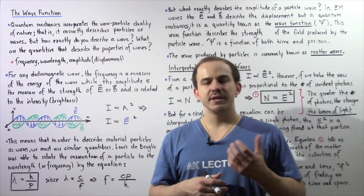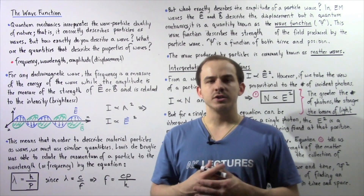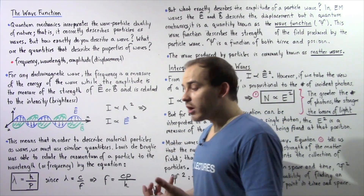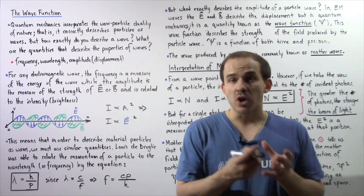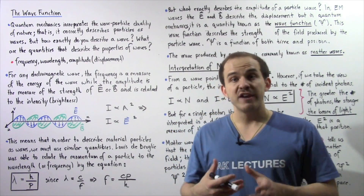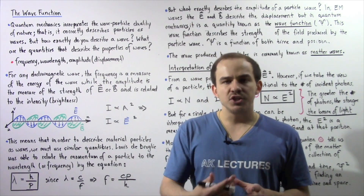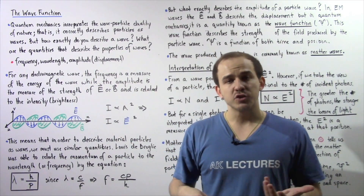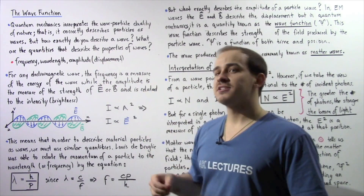One important thing that quantum mechanics does is it incorporates the wave-particle duality of nature — that is, it allows us to describe particles as waves. But how exactly do we describe a wave? What properties and quantities do we use to describe the way a wave behaves? For electromagnetic waves, we can use things like frequency of oscillation, wavelength, and amplitude, also known as displacement.